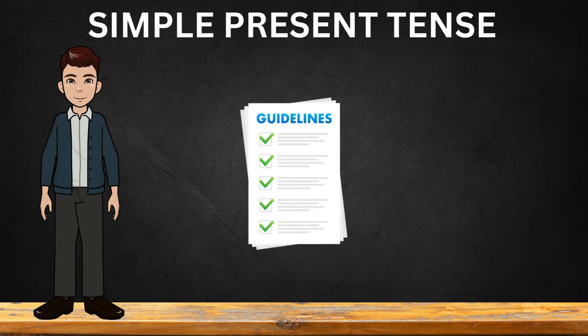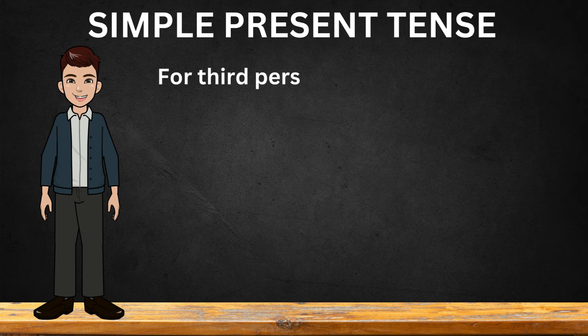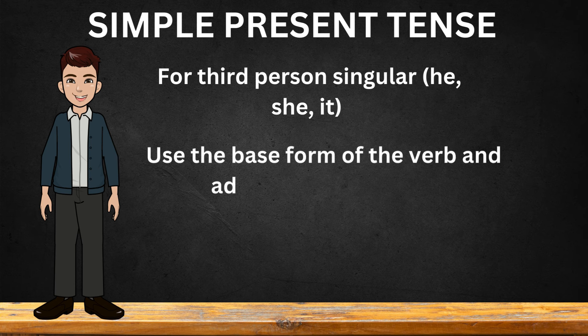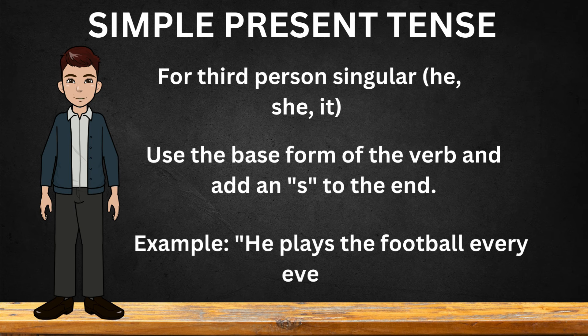There are some principles and guidelines to follow when using the present simple tense. For third person singular — he, she, it — use the base form of the verb and add an S to the end. Example: he plays football every evening.